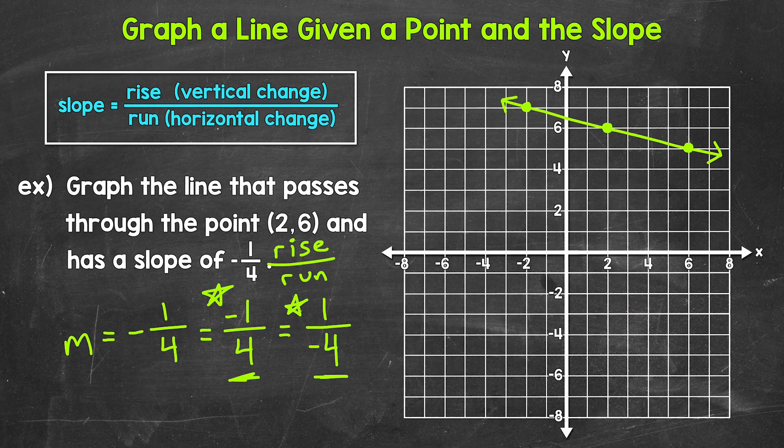Now keep in mind, we only need 2 points to graph a line, but we included 3 here. So there you have it. There's how to graph a line given a point and the slope. Our first step, plot the point. Our second step, go from that point using the slope and plot a second point. And then our last step, draw a line through the 2 points.